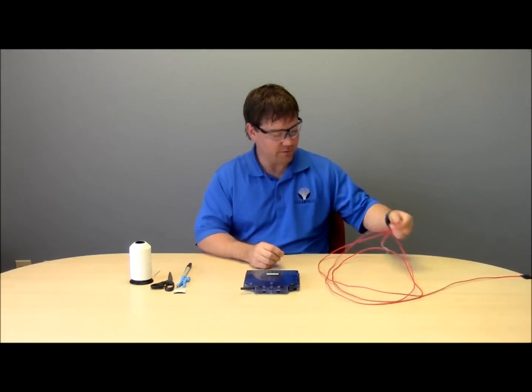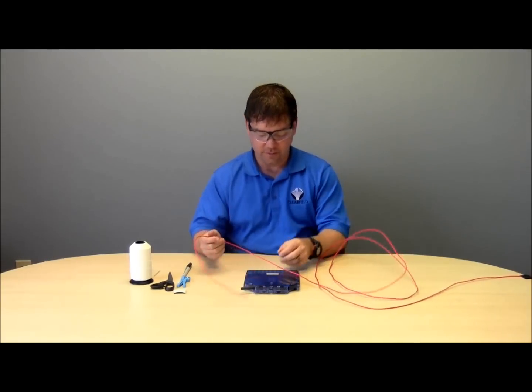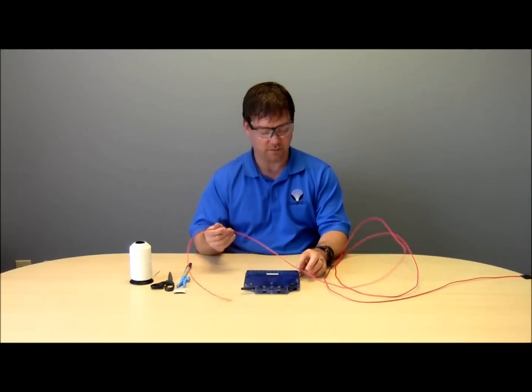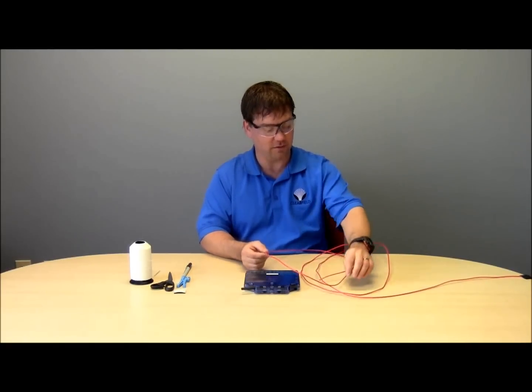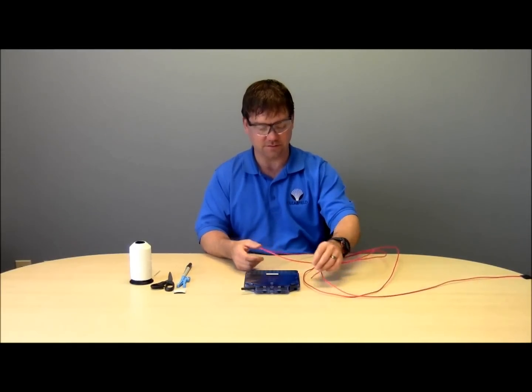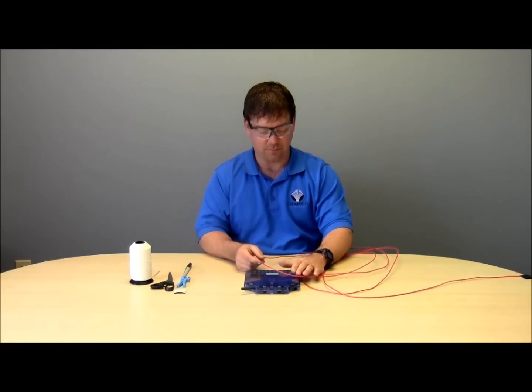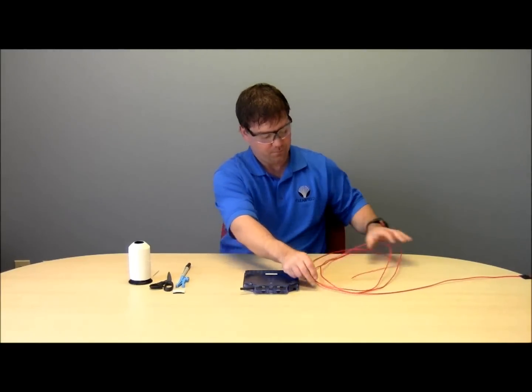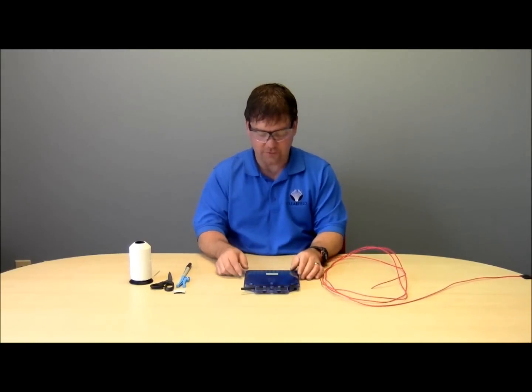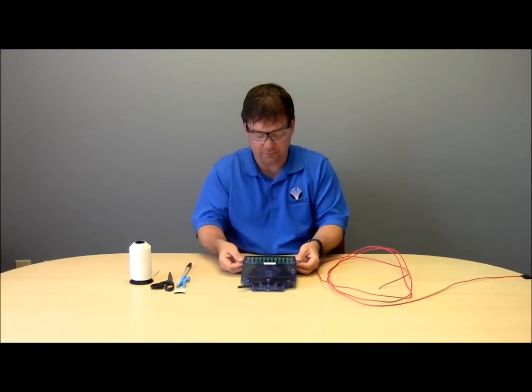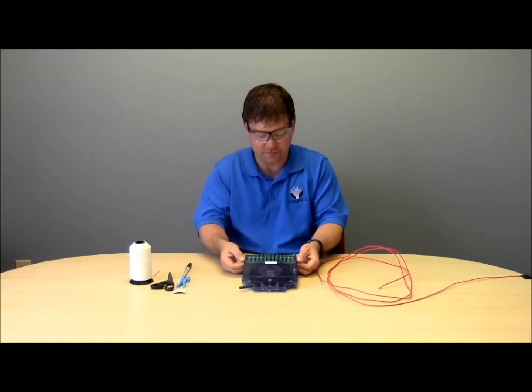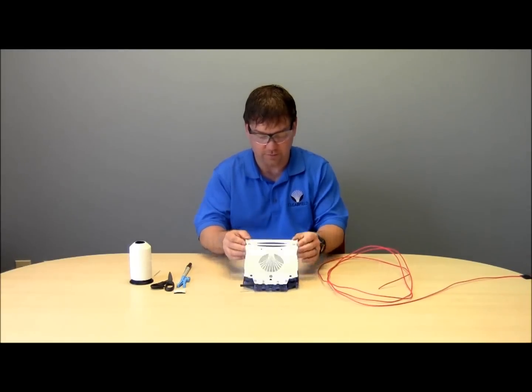Today I've brought in a piece of loose tube buffer tube and on this I've already marked the tie down location and the boot location per the installation manual for the application I'm describing. The first thing I want to do is remove the cover from the Clearview cassette and I can do that by pushing on the tabs on the right and left of the cassette and then lifting the cassette cover away.